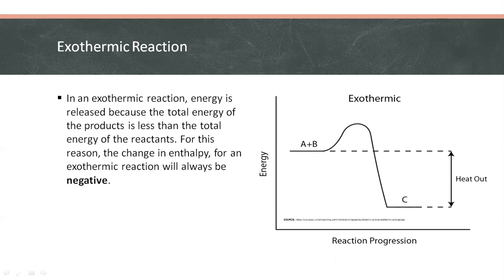In an exothermic reaction, the total energy of the product C in the diagram is less than the total energy of the reactants A plus B, as illustrated. Therefore, the change in enthalpy is negative, and heat is released to the surroundings.